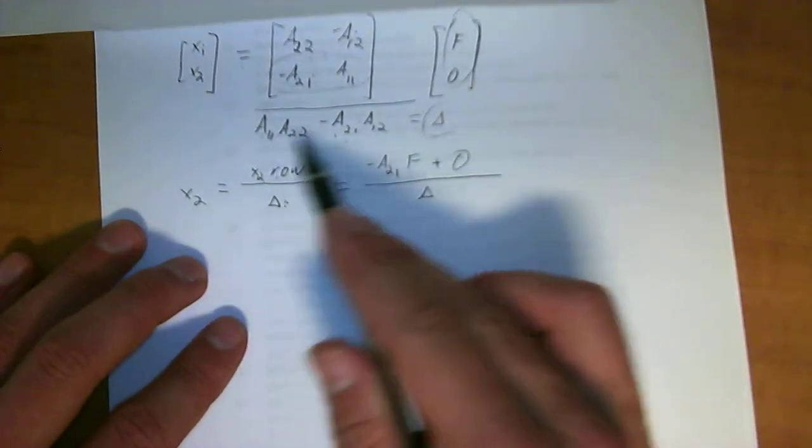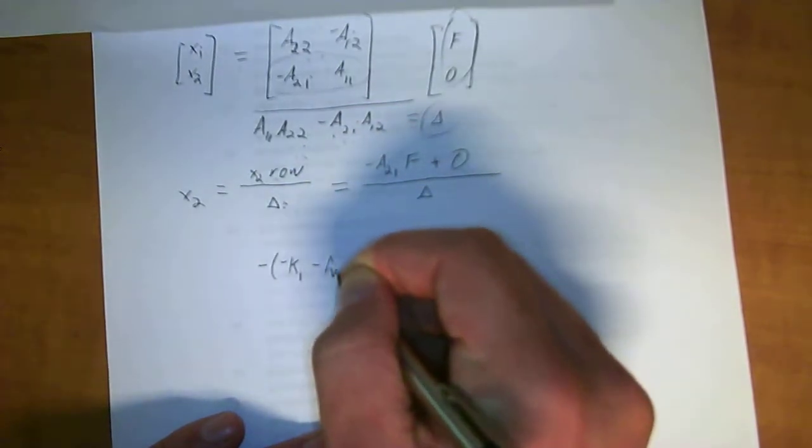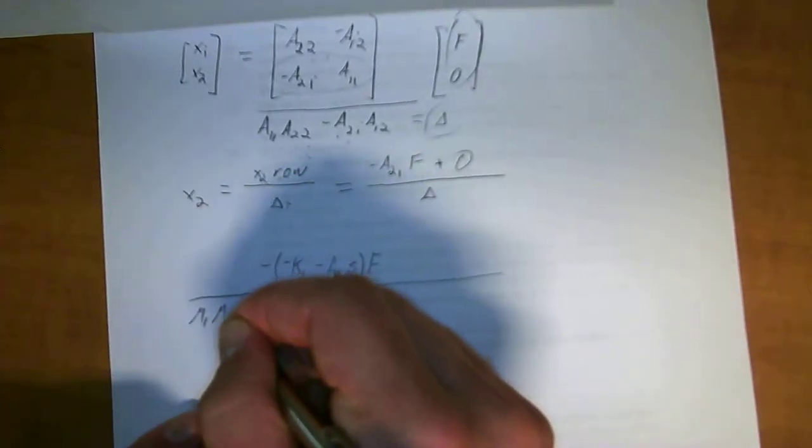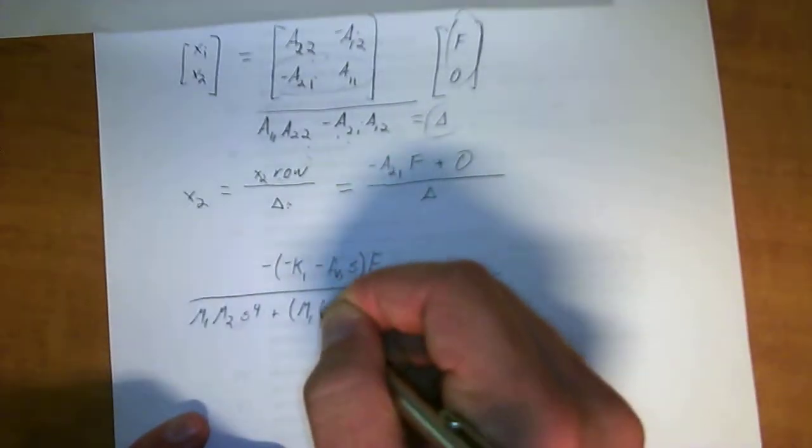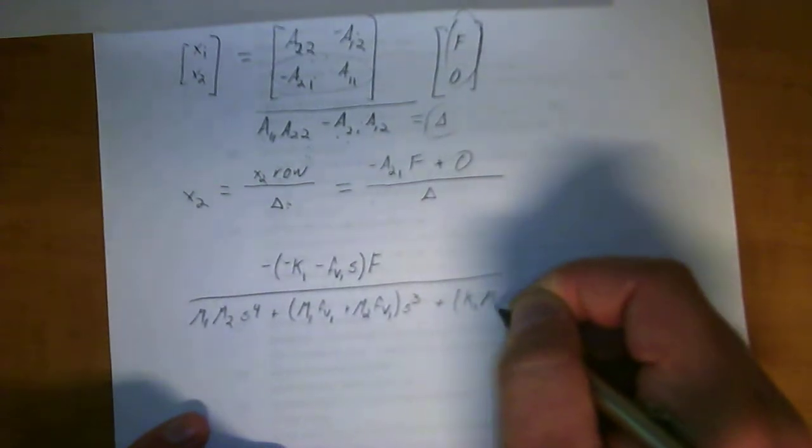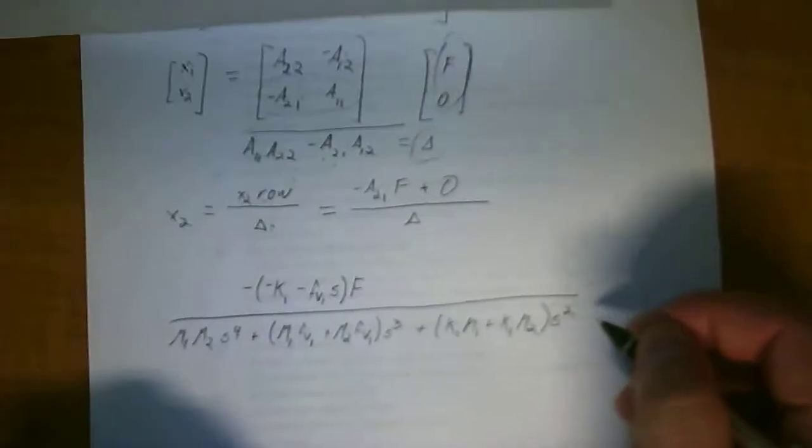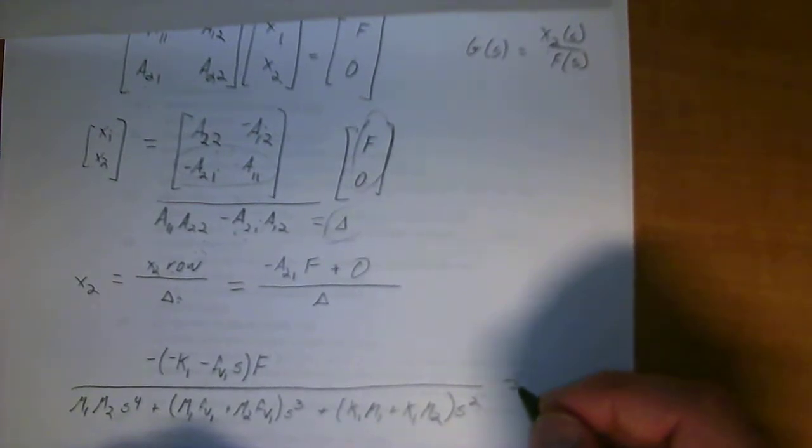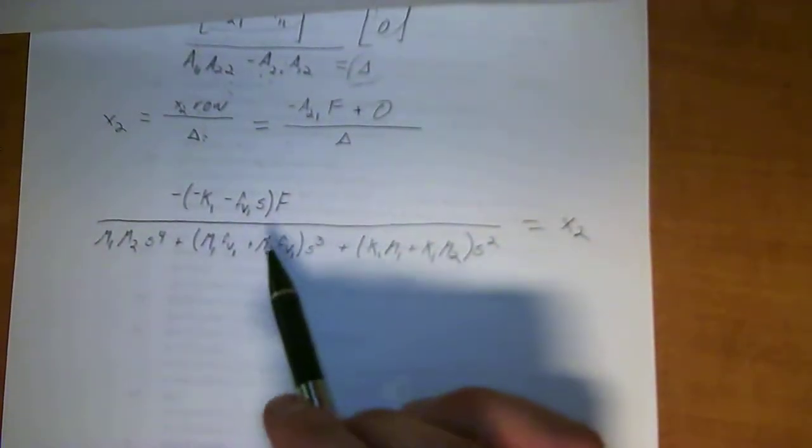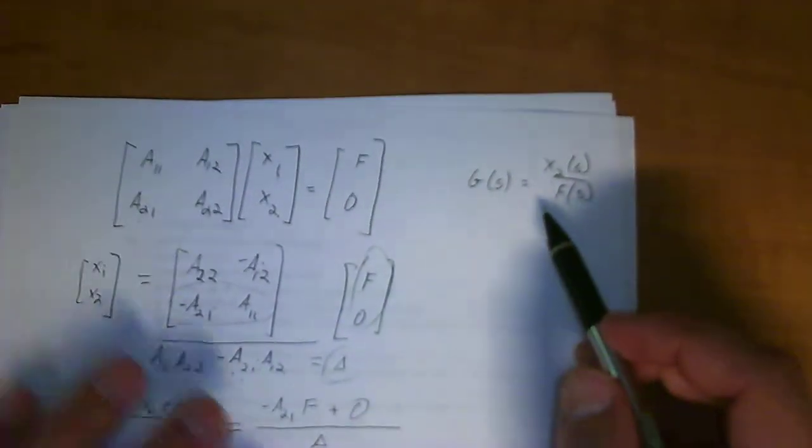And then the determinant, it's going to be a little bit longer. But if you put it in your favorite equation solver, I'm just going to go ahead. It's going to be delta. I'll just solve it out. Putting in the values for a21 and a11 and a22 and so on and so forth. Solving this all out, you'll end up with negative negative k1 minus fv1 of s times f, all over m1 m2 s to the fourth, plus m1 fv1 plus m2 fv1 s cubed, plus k1 m1 plus k1 m2 times s squared, is equal to x2.